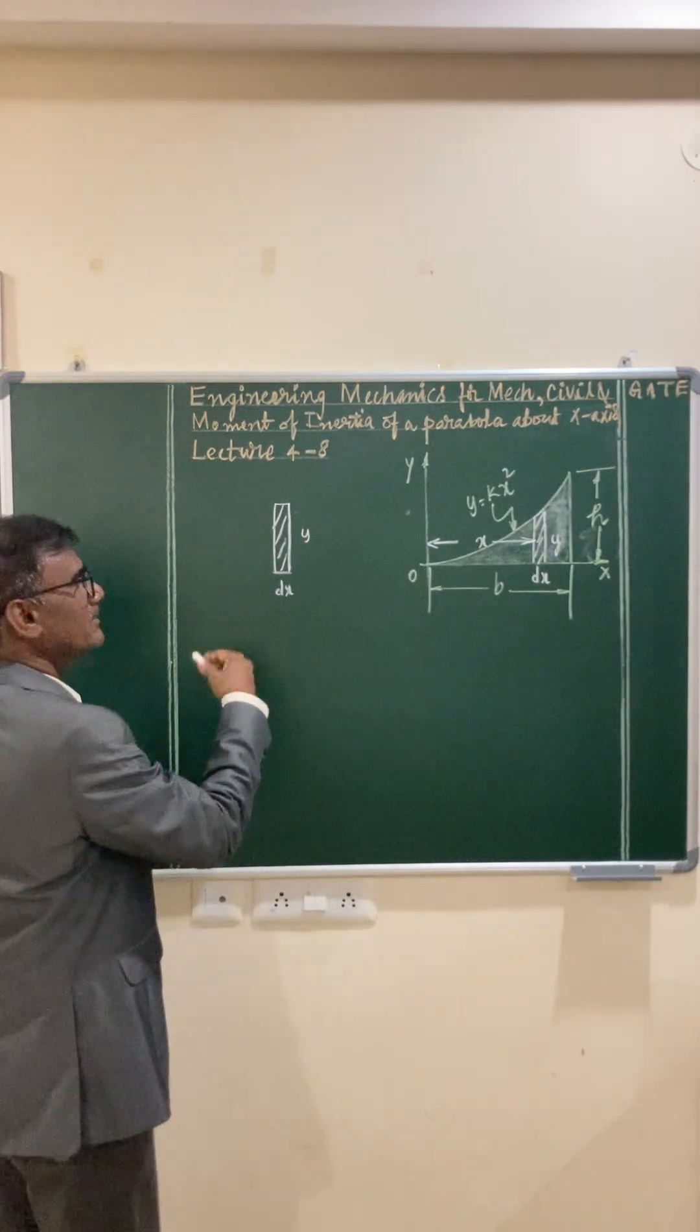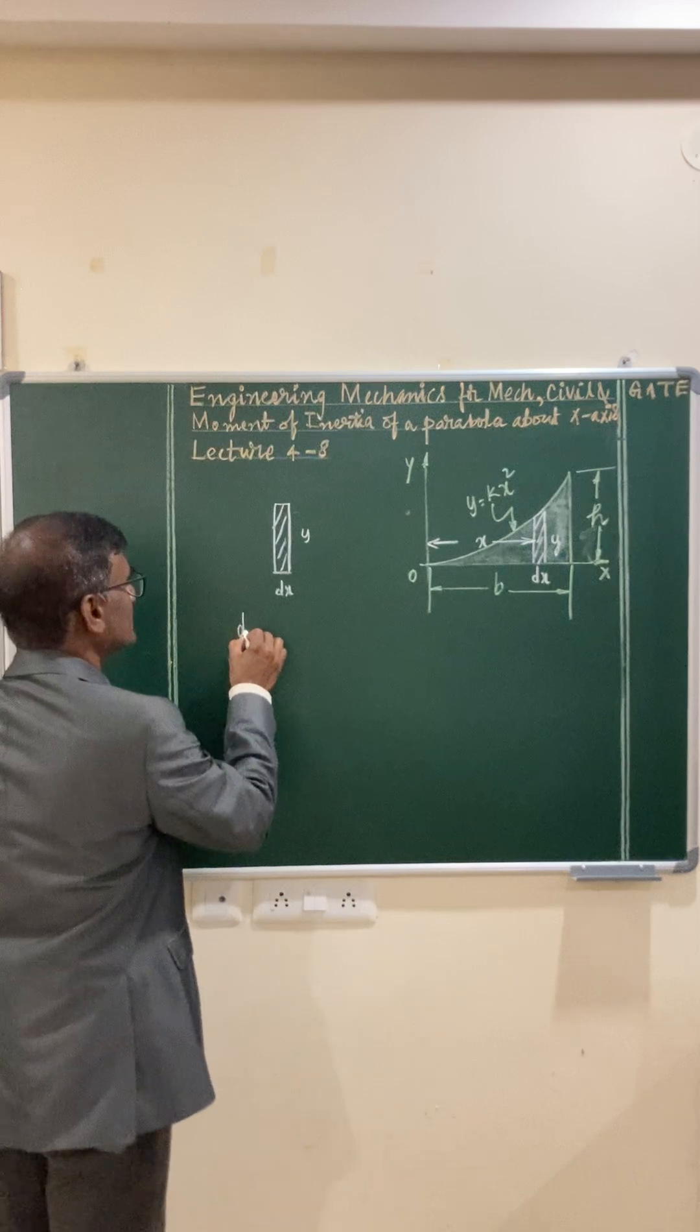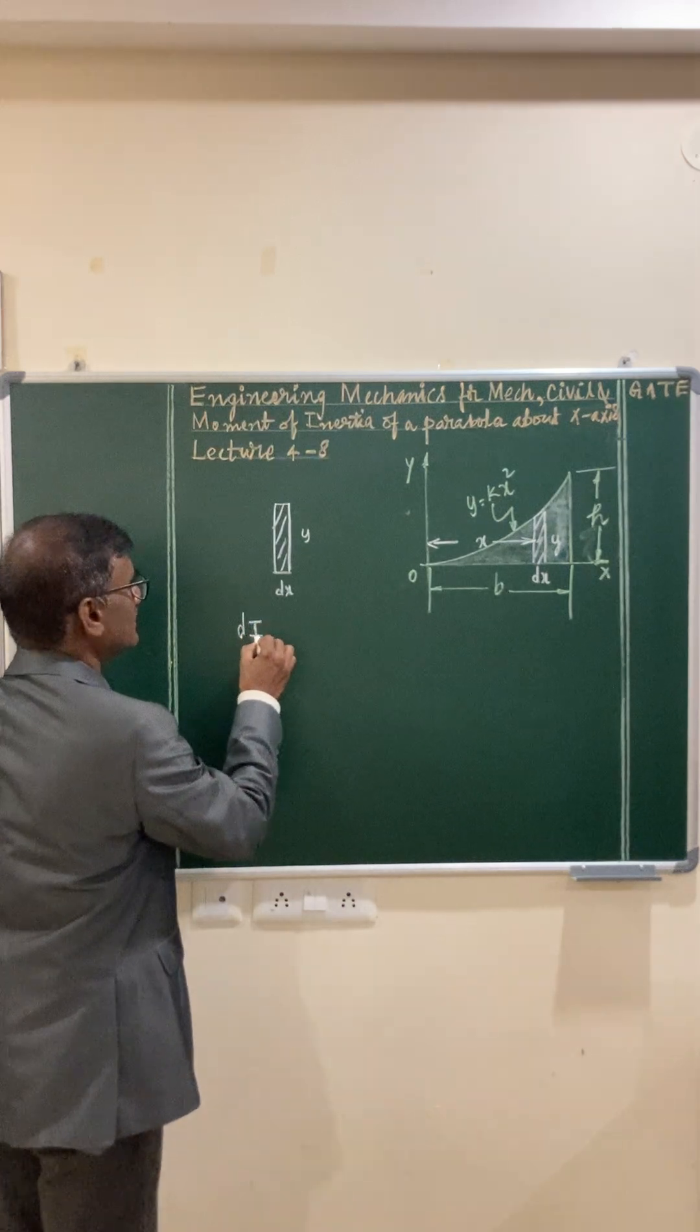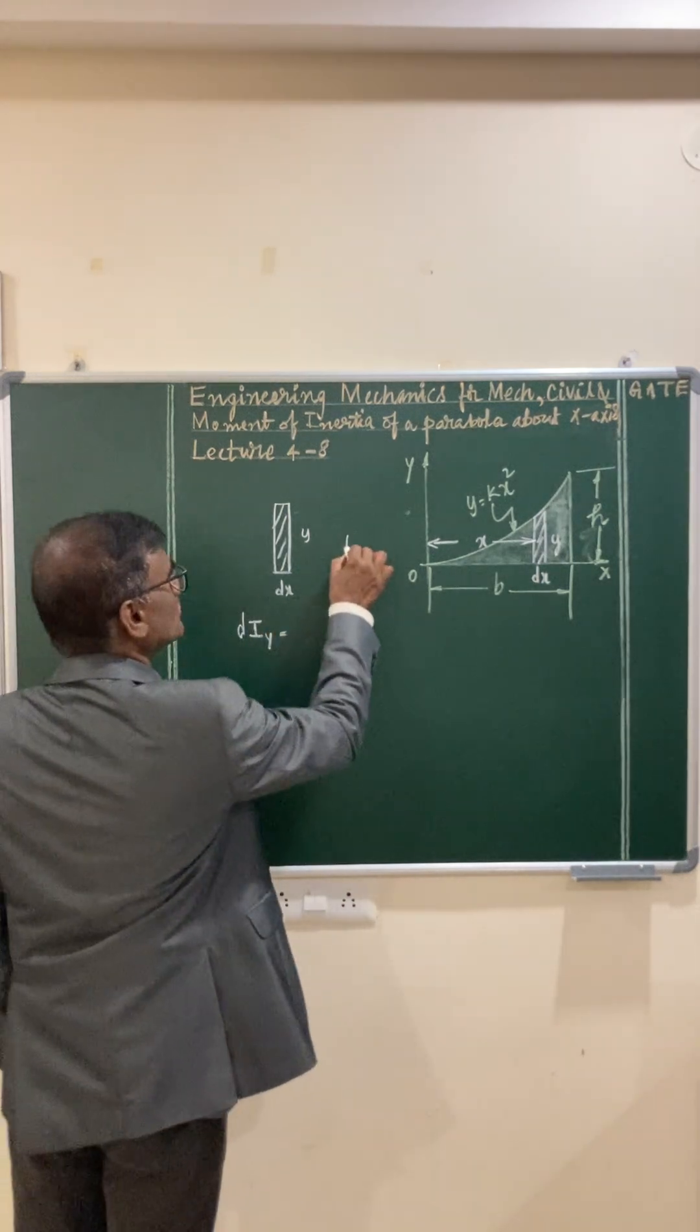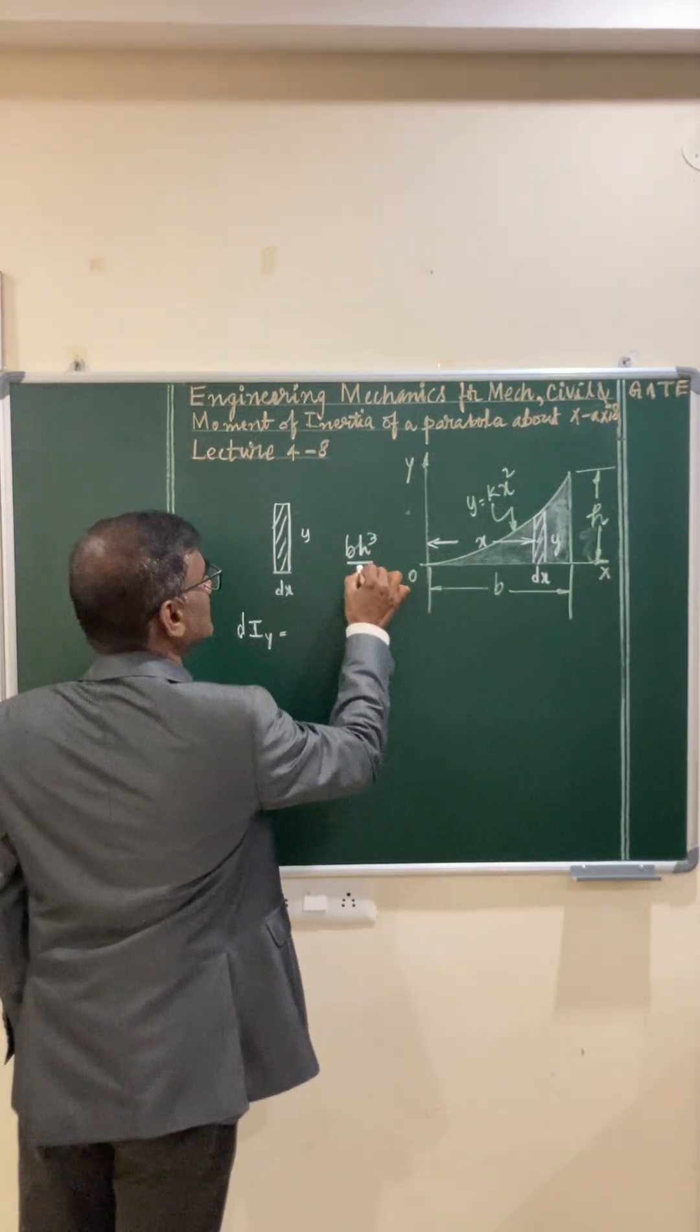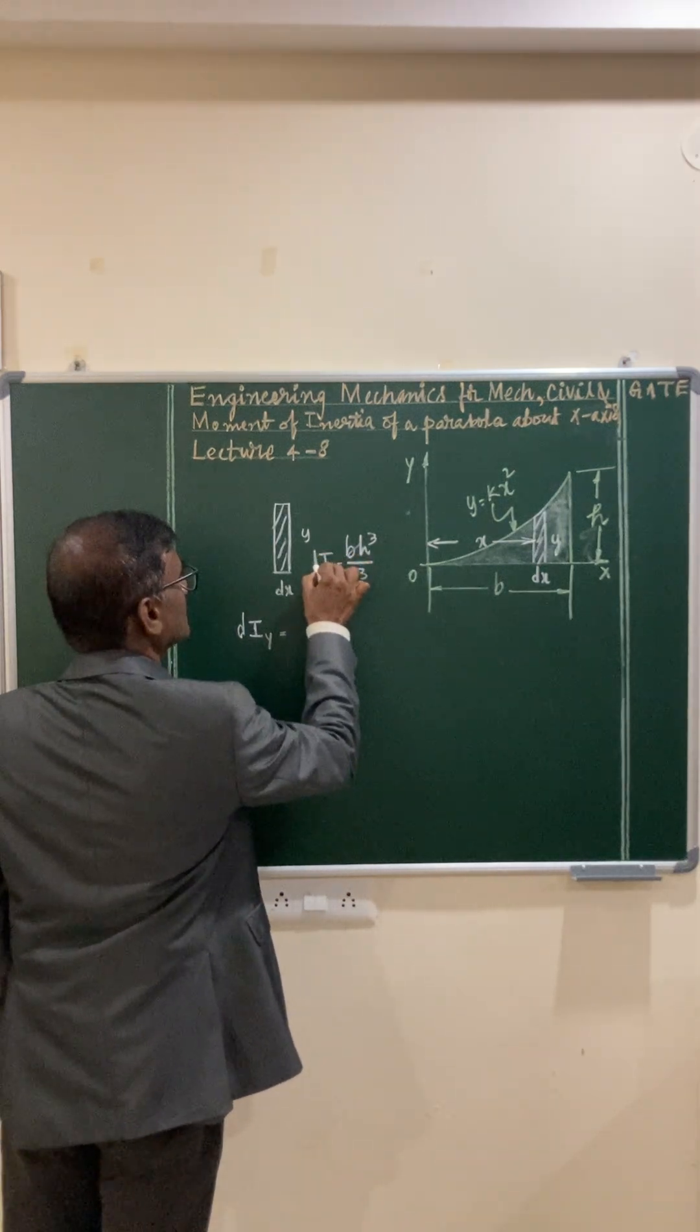Write the expression for the elemental moment of inertia of a rectangle. You are writing the expression for iy, this element diy is equal to the formula bh cube. It is bh³/3 about the base. So this is the elemental moment of inertia.